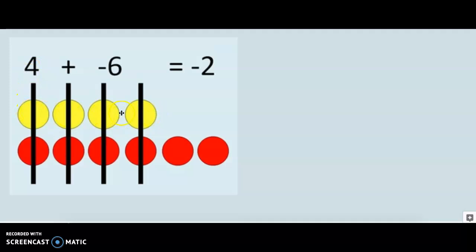What we have here is we have positive 4, and we're adding negative 6. And so, when they cancel out, we don't count those anymore, and we end up with two red ones, which gives us a negative 2.